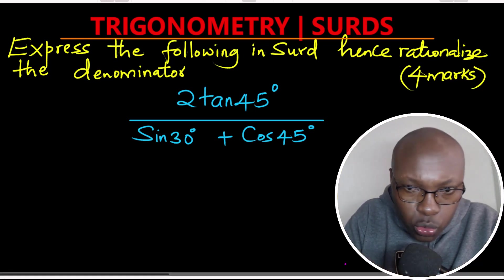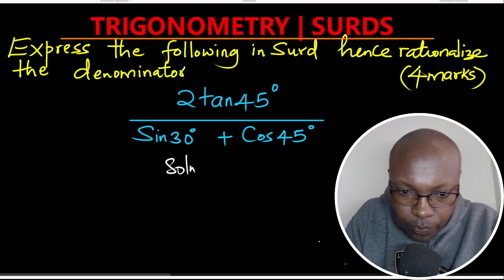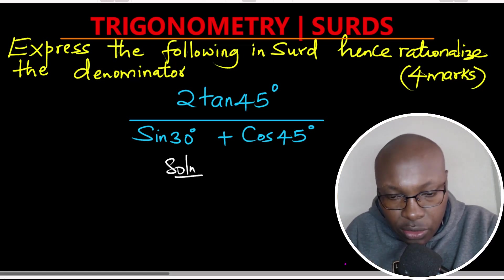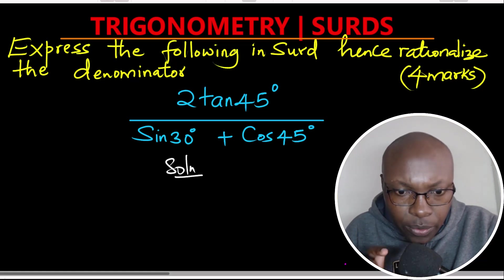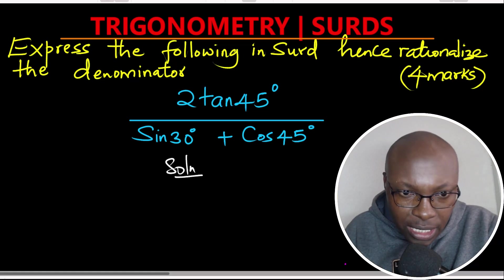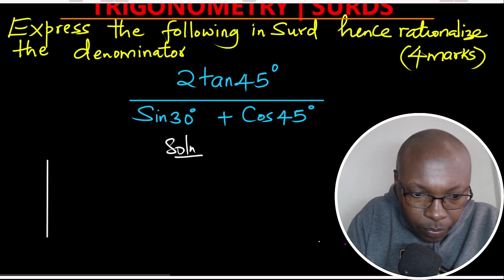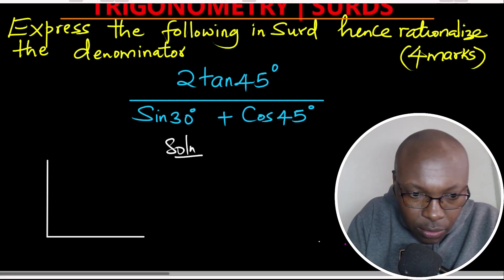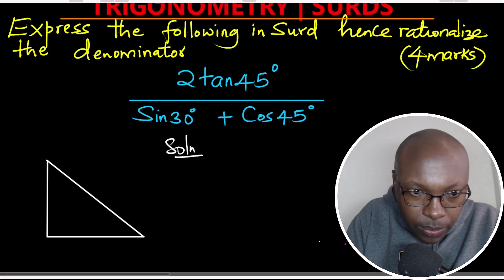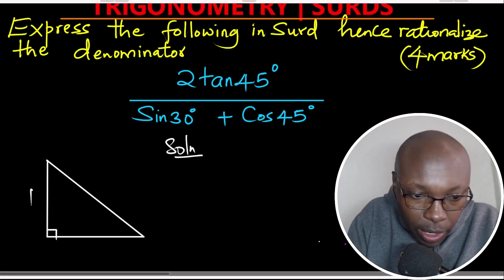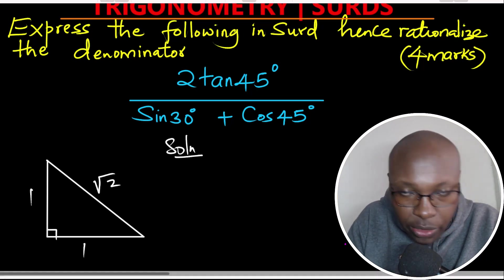You require two triangles. The first triangle is an isosceles right-angled triangle, and the second triangle is an equilateral triangle measuring two units on all the sides. We start with the first triangle — an isosceles right-angled triangle. It is right-angled at one point, with the two shorter sides measuring 1 and 1.